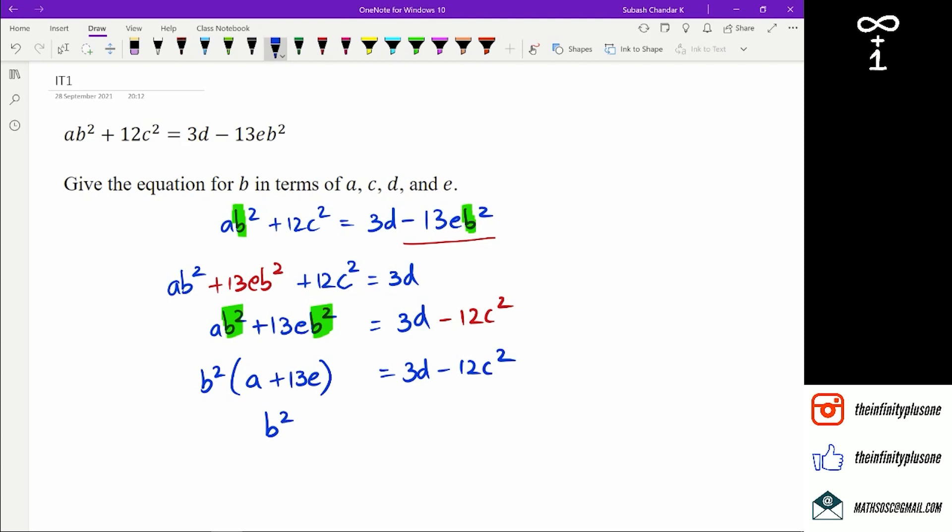Then I can get rid of the a plus 13e, which is going to end up in the denominator of this entire thing. So I'm going to get over a plus 13e. I'm not finished with the question because the question is asking for the equation for b. And I've got b² here. So I'm just going to put b with a little square root symbol divided by a plus 13e.